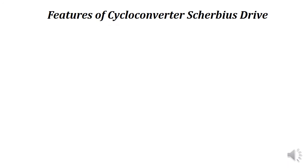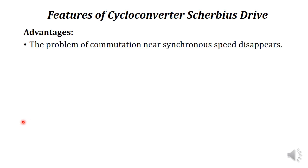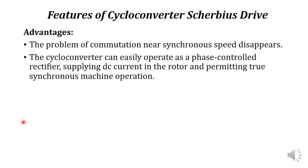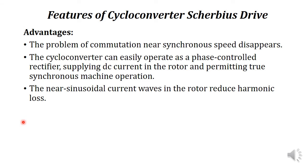Now we will discuss the features of the cycloconverter Scherbius drive — its advantages. First, the commutation problem experienced in the DC-link Scherbius drive near synchronous speed is not present in the cycloconverter Scherbius drive. Second, the cycloconverter can easily operate as a phase-controlled rectifier supplying DC current in the rotor and permitting true synchronous machine operation. Third, the near-sinusoidal current waveforms in the rotor reduce harmonic losses.